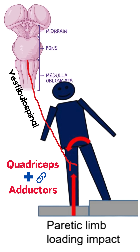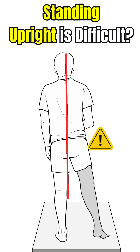Because of the activation of the quadriceps, the adductor muscles of the hip will also act along with it, as they are connected in a synergy. As a result, the patient is going to fall towards the hemiplegic side, and this is why the hemiplegic patient finds it difficult to perform upright standing activity.